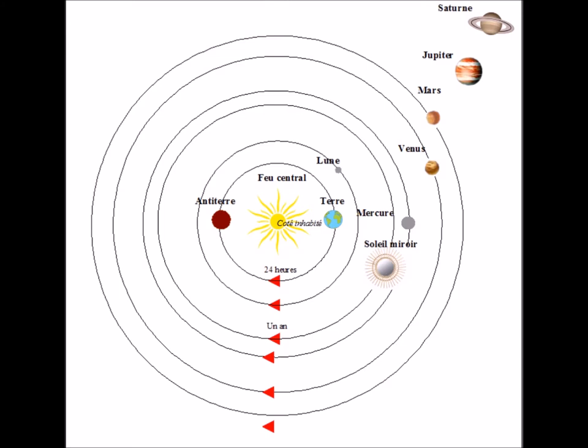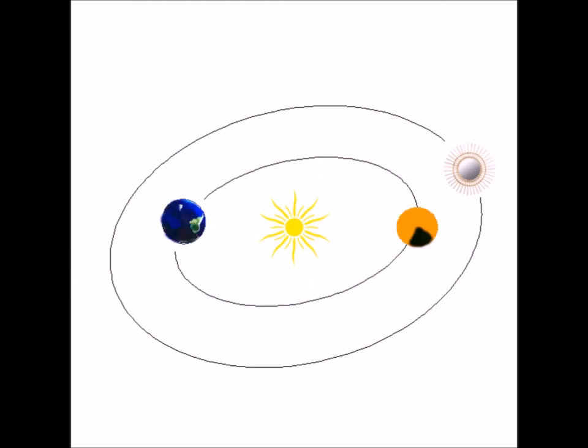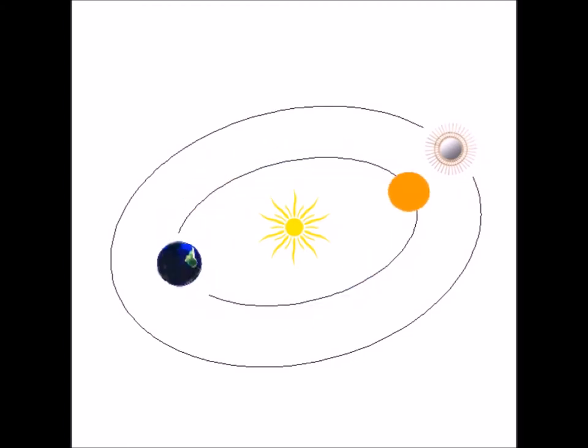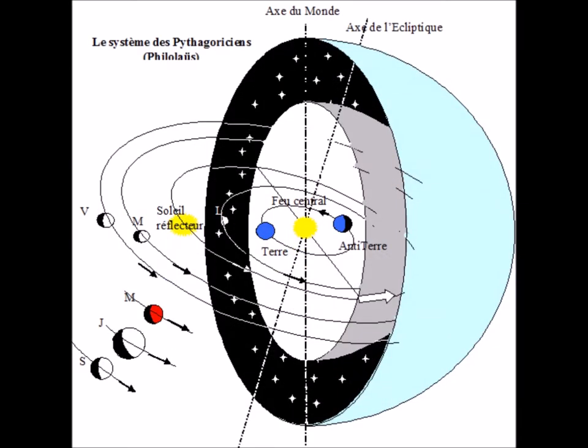To the then known celestial bodies, Pythagoras adds an anti-earth, located opposite the earth with regard to the central fire. The anti-earth is therefore also invisible.